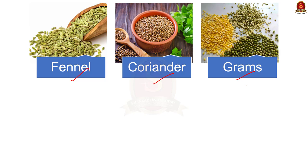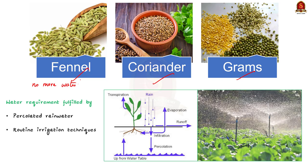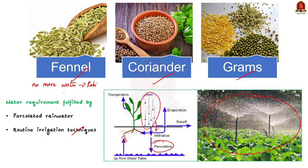Rabi crops do not require more water like the Kharif crops. Kharif crops are monsoon crops and they require more water. Normally, Rabi crops are grown with rainwater that has percolated into the ground during the monsoon season. The rainwater increases the moisture content of the soil, and Rabi crops use that moisture for growth, or otherwise they grow with the help of routine water irrigation techniques. Heavy rain in winter season will spoil the Rabi crops.